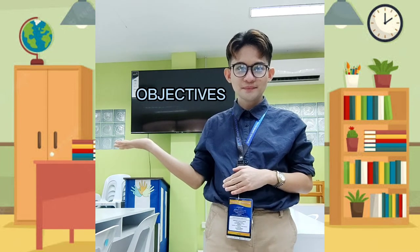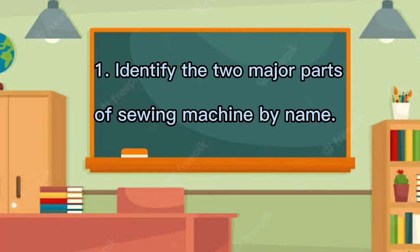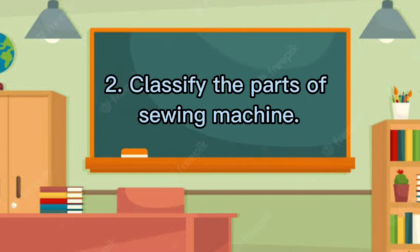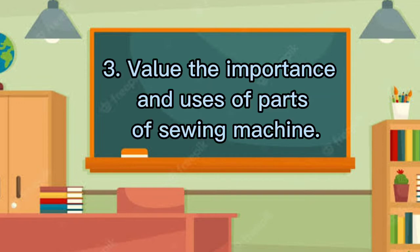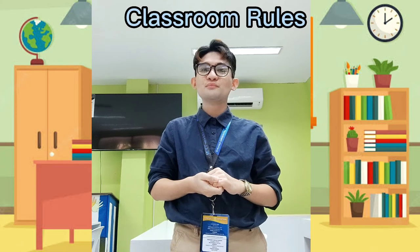Class, before we formally start, kindly read our objectives. At the end of the period, the students will be able to identify the two major parts of sewing machine by name. Second, is to classify the parts of sewing machine. Lastly, is to value the importance and uses of parts of sewing machine.